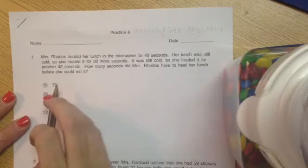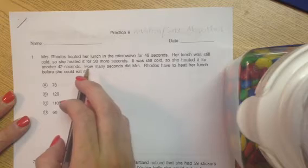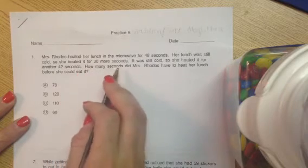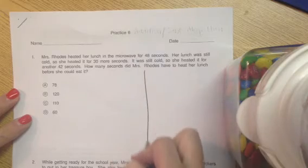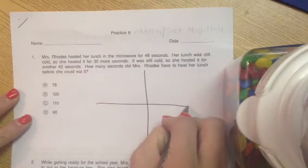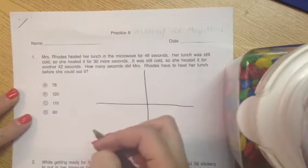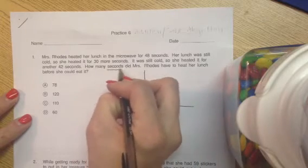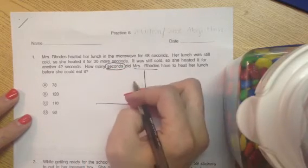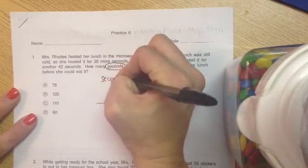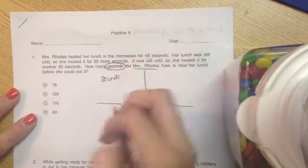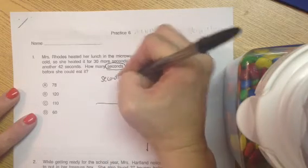We're going to go through and search for important information. The first thing we want to do is look at our question: How many seconds did Mrs. Rhodes have to heat her lunch before she could eat it? That is the main idea, what we're looking for in the question. So we're looking for seconds. Lunch was heated.